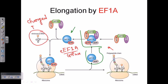Once EF1A is released with GDP, we need to recycle this protein again and again, so we need to replace GDP with GTP. For this replacement, we need a complex of Elongation Factor 1B, D, and G proteins. This complex helps in the replacement and substitution of GDP with GTP for Elongation Factor 1A. Once that is done, the GTP-containing EF1A repeats this process — bringing charged tRNA and binding it to the A site.